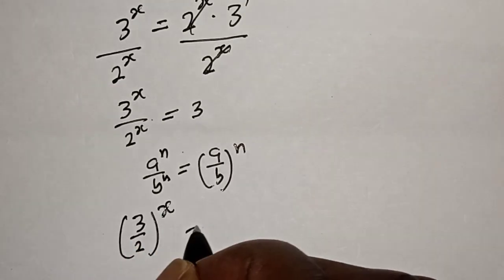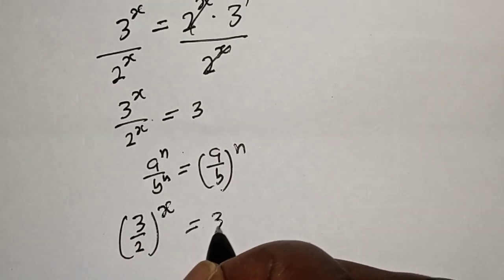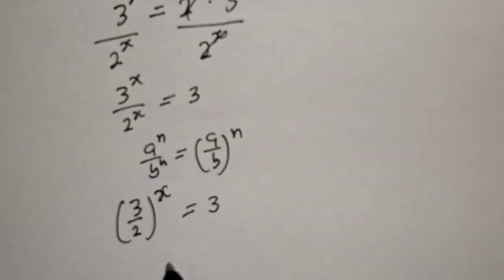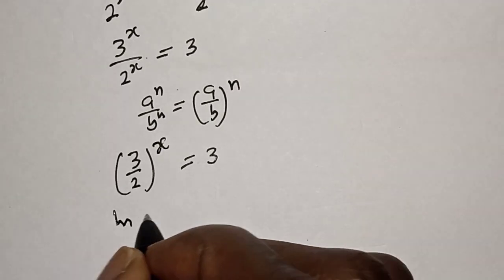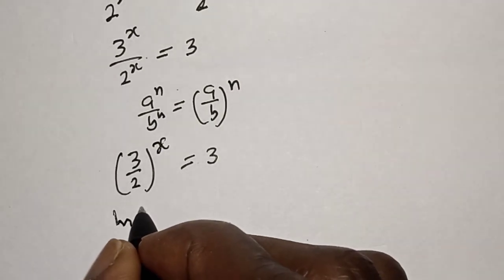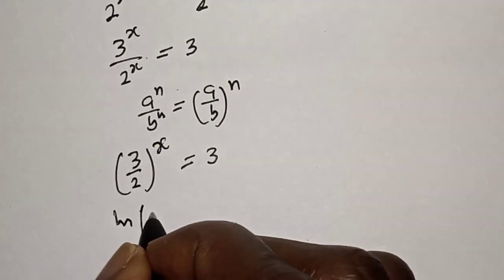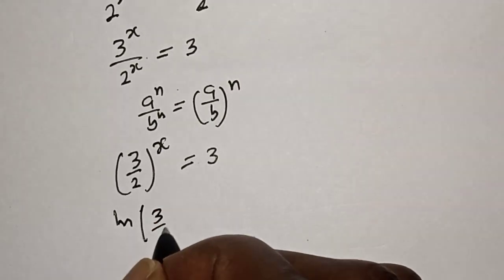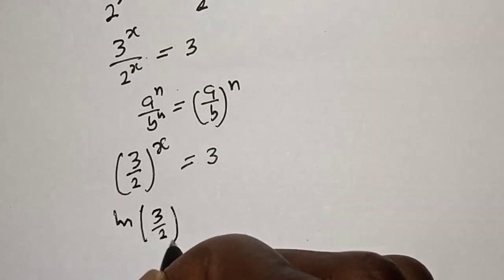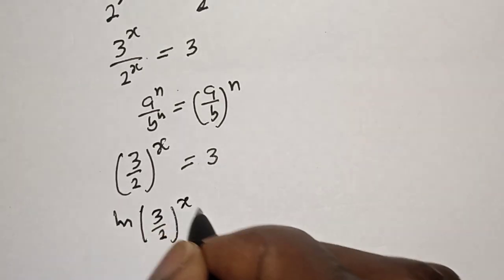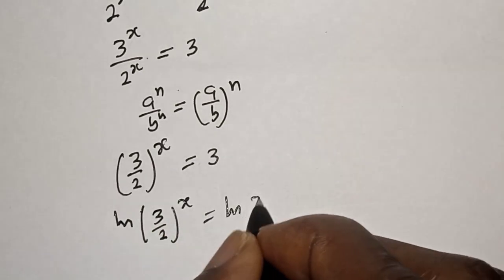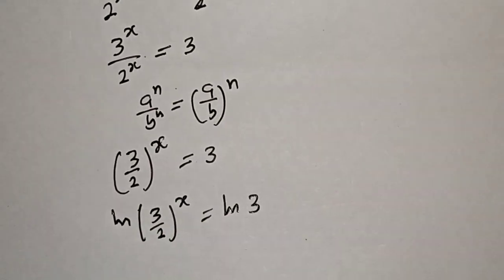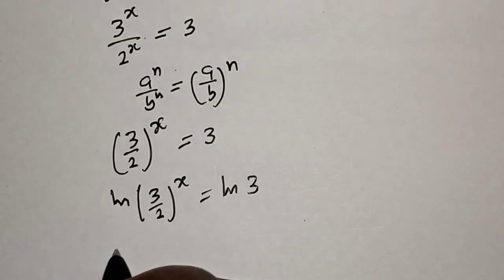So 3 over 2 raised to power s is equal to 3. Let's take the natural log of both sides. Natural log of 3 over 2 raised to power s is equal to natural log of 3.